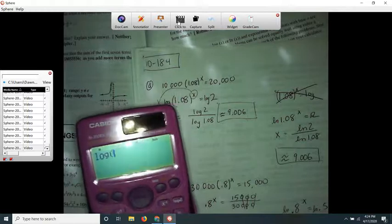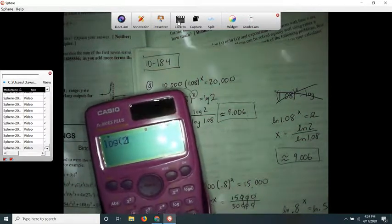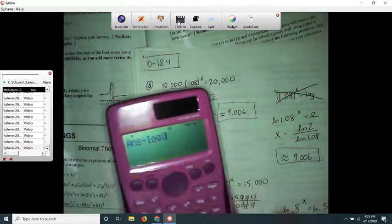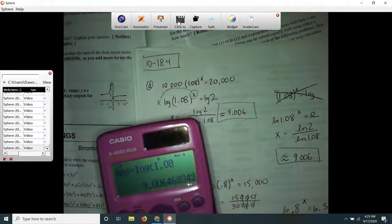I typed log of 2, and I always push the equal sign because I wonder about the order of operations, divided by log 1.08. I never trust if my calculator is going to know the order of operations.